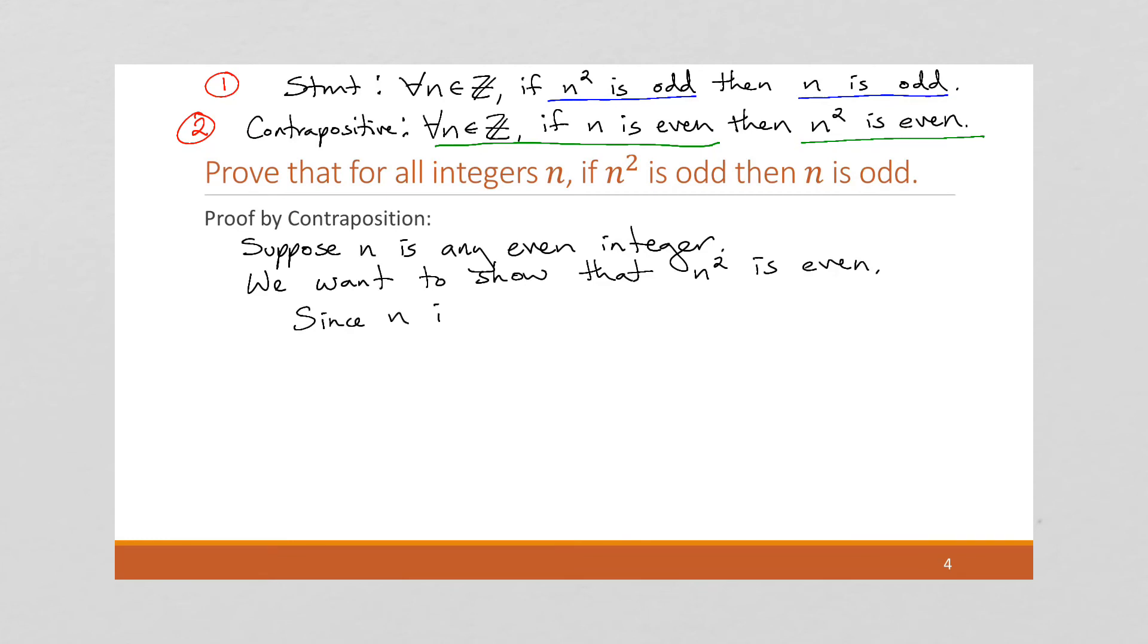Since n is even, what do we know? Well, we know we can give it, we know it equals two times some integer. We used k when we were trying to prove it directly, but since we scratched all of that, we can reuse it because it's not being used in this proof anywhere. So n is even.